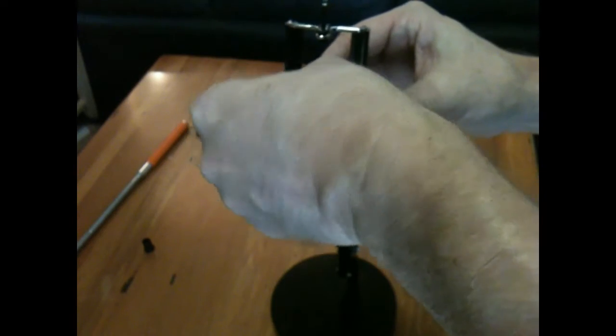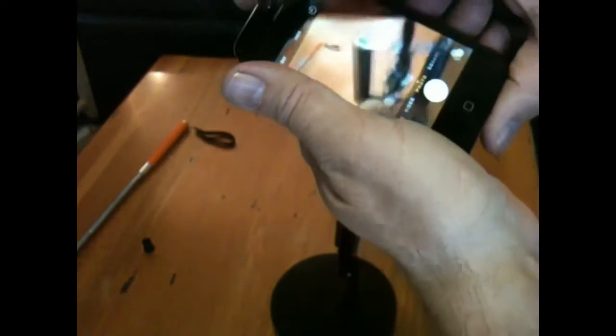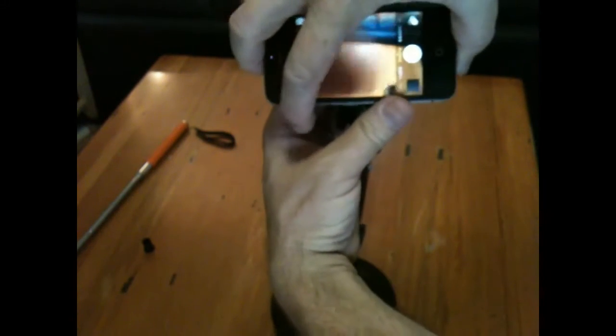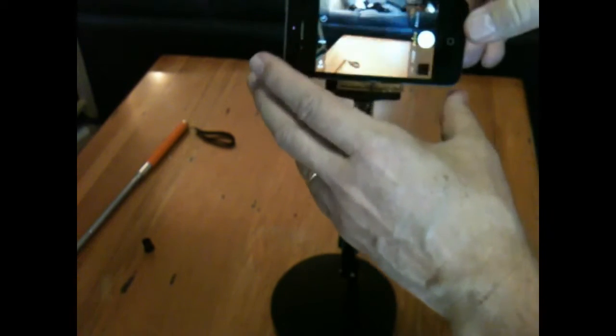Now to try the cell phone jib with a real cell phone. This is my old iPhone 4.2 which I actually still use all the time. So I'm going to give it a try to see what it looks like shooting video.